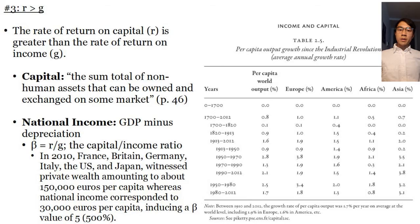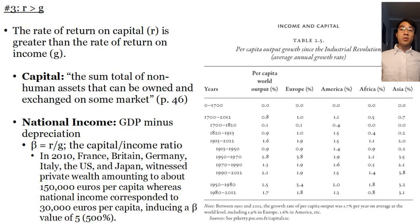The third claim Piketty advances in his book is rather technical: it is the claim that R is strictly greater than G. R stands for the rate of return on capital, and it is supposed to be greater than the rate of return on income G. Capital is defined as the sum total of non-human assets that can be owned and exchanged in some market. National income is defined as GDP minus depreciation of capital. Beta is equal to R over G — that is, the capital income ratio.